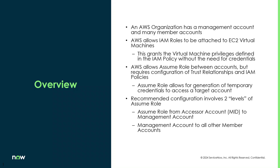An AWS organization is a collection of AWS accounts. At its core, there will be a management account, and everything else is a member account underneath the organization. AWS allows IAM roles to be attached to EC2 virtual machines, granting the VM all rights and privileges defined in the IAM policy without needing specific credentials. AWS also allows Assume Role between different accounts, but it requires configuration of trust relationships and IAM policies. Assume Role generates a temporary credential to access that target account.